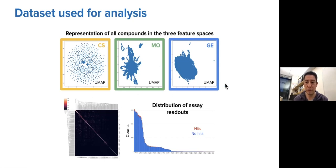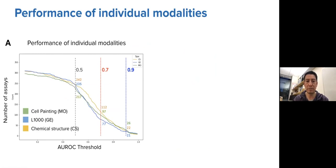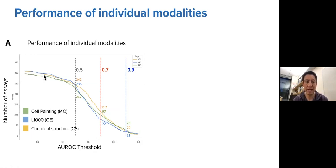In the middle, we use ChemProp, which computes chemical structural features and can also integrate features from other sources including morphology and gene expression, to train supervised models for predictions. Here is the performance of individual modalities: we measure the area under the curve at different thresholds and count how many of the 314 assays can be accurately predicted by each of the three input feature spaces.